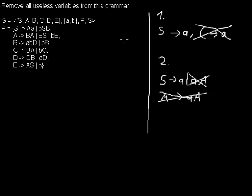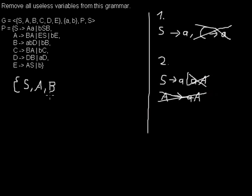Let's start with the first case: we check if we have variables that we can't reach from the start symbol. We have S. We can reach A. If you have a really big grammar, you may want to write them down. First, you can always reach the start symbol S. Then you can reach A with this rule, and you can reach B with this rule.